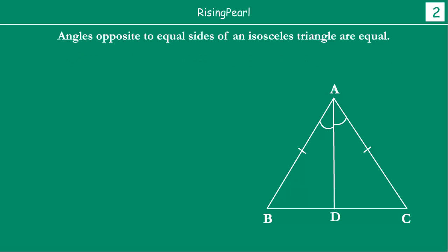So what we do first of all is we do a small construction. We drop an angular bisector. From vertex A, where we have AB and AC, we draw an angular bisector AD of angle A — that is, we draw a line which bisects angle A into two equal parts. So these two angles are equal.